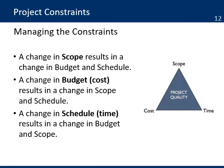It is important to understand the relationships among these constraints. Any changes in any one of the sides will have an impact on the other sides. Changing the scope — adding or reducing — requires adjusting the budget and schedule. A change in the budget, either an increase or reduction in cost, means you need to evaluate the impact on scope and schedule. Even a change in the schedule requires assessing the impact on budget and scope. Managing these constraints occurs throughout the project lifecycle, and it is an important concept that needs to be understood by project managers.